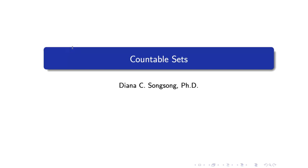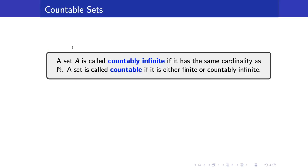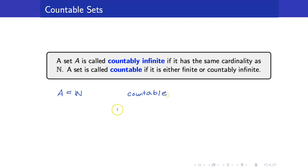In this lesson, we are going to study countable sets. A set A is called countably infinite if it has the same cardinality as the set of natural numbers — that is, A is equivalent to the set of natural numbers. A set is called countable if it is either finite or countably infinite. So we have discussed finite sets and countably infinite sets.